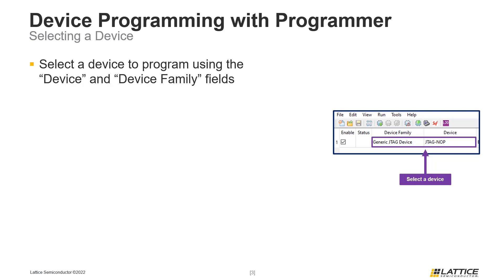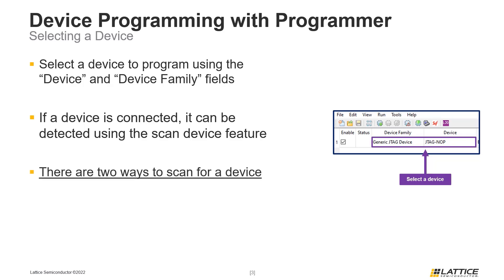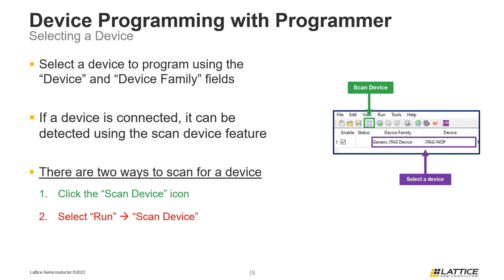Another way a device can be selected is using the Programmer tool's Scan Device functionality. This will automatically populate the device and device family settings fields for a row. For this feature to work, a physical device must be connected to a computer using a programming cable. Scan Device can be initiated via the Scan Device icon or by selecting Run from the menu bar and then Scan Device from the drop-down list. If a device is detected, its settings will be populated to the first row of the Programmer tool.